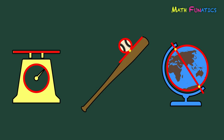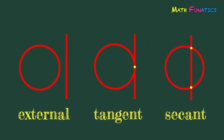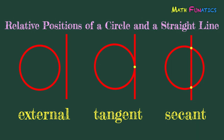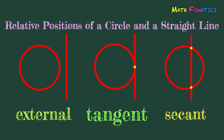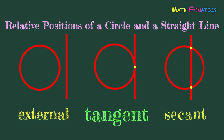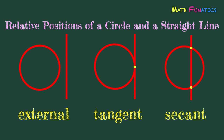Let's go back to the three illustrations. The scale shows the external position of a line. The baseball and bat show the tangent position. And the globe shows the secant position. All these three are the relative positions of a circle and a straight line. A straight line having no point in common with a circle is called external. A straight line which meets or intersects the circle at one point is called tangent. And a straight line which meets or intersects the circle at two points is called secant.